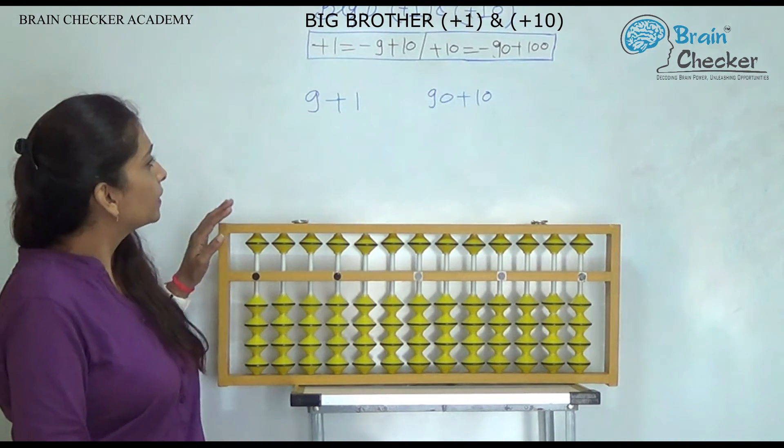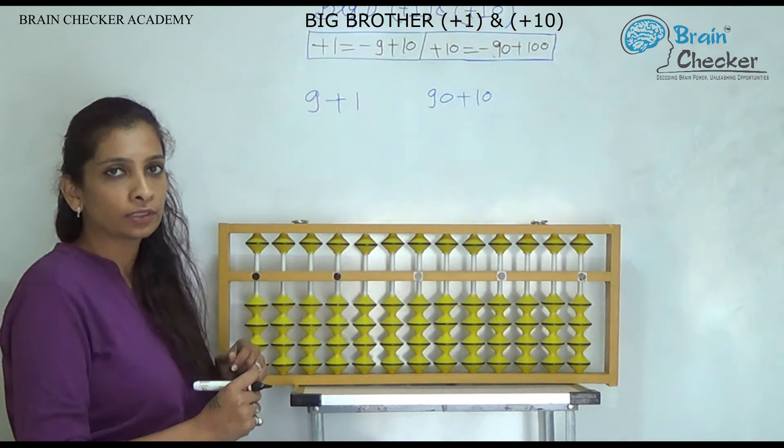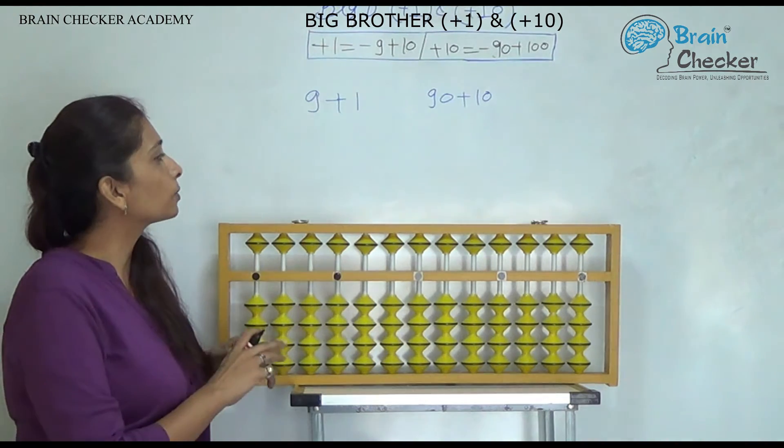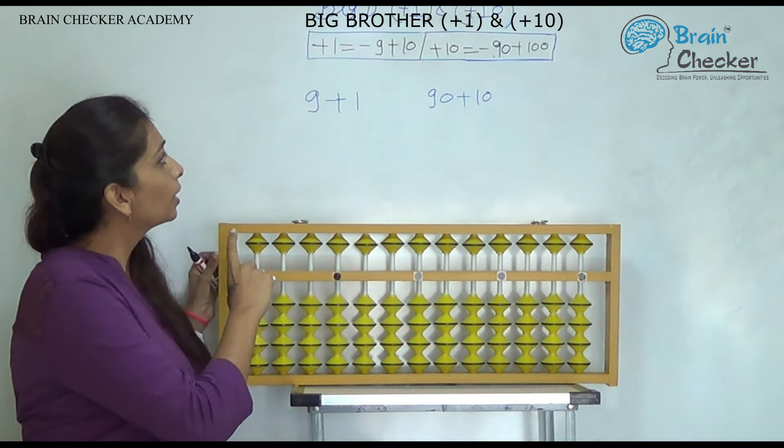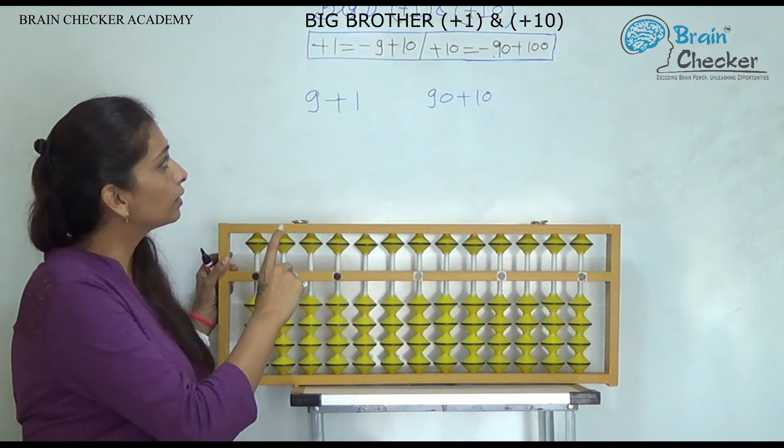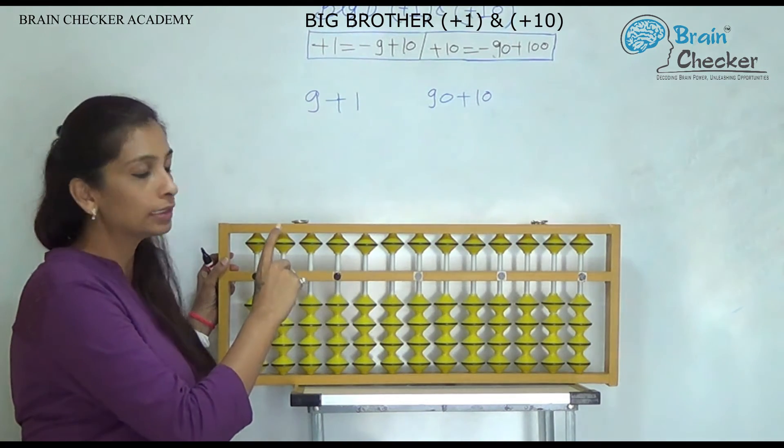The first example is 9 plus 1. Now it is very easy to calculate on finger, but we have to learn the formula. So what is the formula? Plus 1 is equal to minus 9 plus 10.